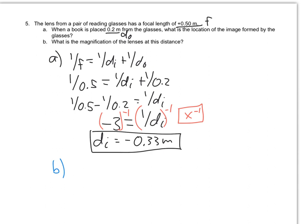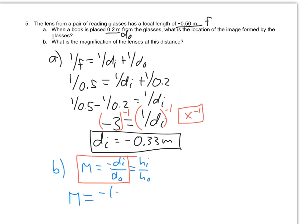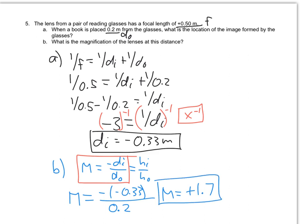For the second part, we want to find the magnification. Magnification equals negative DI over DO, or HI over HO. Since we only know DI and DO, we use the first form. Magnification equals negative of negative 0.33 — keeping in mind there are two negatives because DI is negative and the equation has a negative sign — divided by DO of 0.2. We find magnification is a positive 1.66, or 1.7 rounded to one decimal place. By convention, we include the plus sign.